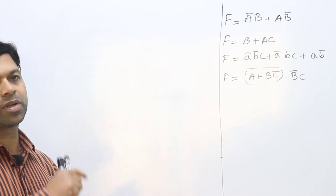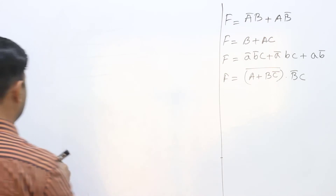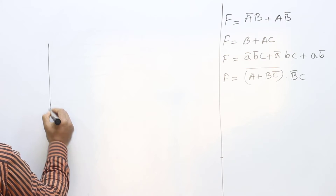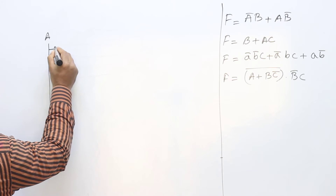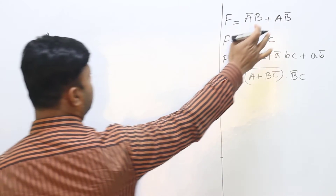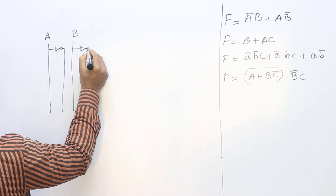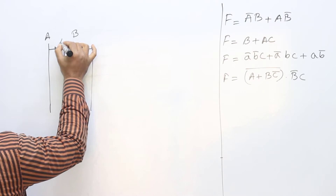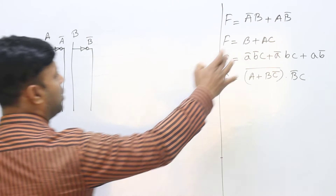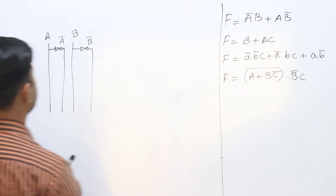If you have a variable, the line will be 0. Now, if you have A, then we have A. What do you do? A is 0. Then B is 0. So we have to do this with B.